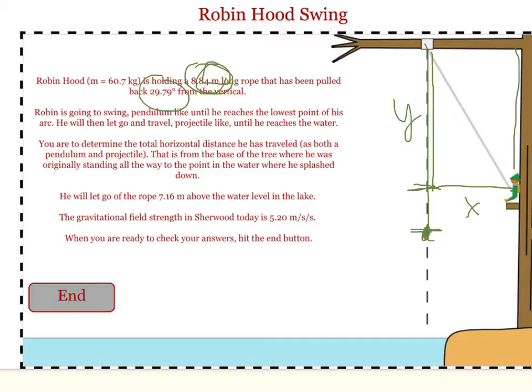If we take the length of the rope, that 8.84, minus off the y value from our triangle, we'll get Robin's change in height while he was swinging like a pendulum.